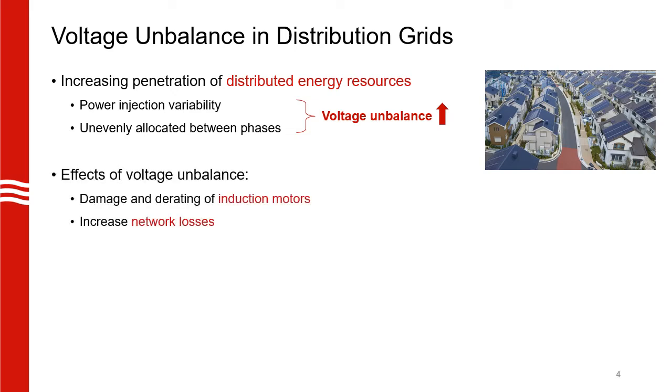In an unbalanced network, we have negative sequence components that affect three phase induction machines, which are by far the most commonly found loads in the grid and they are also very expensive. Additionally, we also have zero sequence currents flowing between the neutral connections and this can lead to increase in network losses.